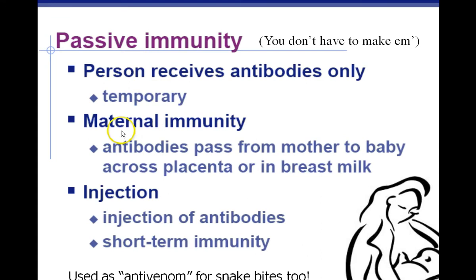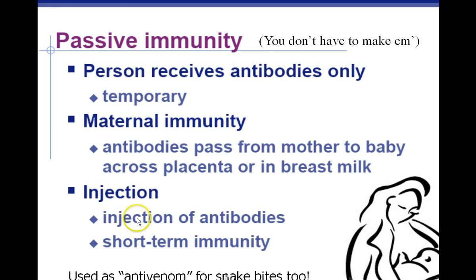Passive immunity is not quite as good as active immunity because you have to constantly receive more from an outside source — your body is not stimulated to make its own B cells and memory cells for future protection. So it's only short-term immunity. In passive immunity the person receives antibodies only, and it's temporary. For example, a mom makes antibodies and passes them into breast milk; the baby gets those antibodies and is protected against the same things mom is protected against. But once the child stops breastfeeding, those antibodies are gone.